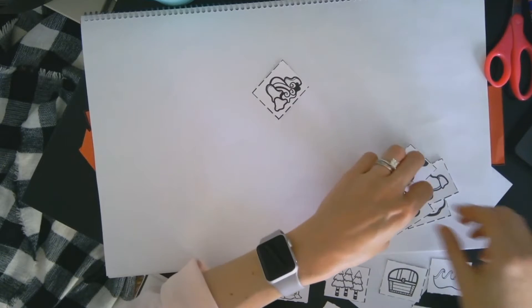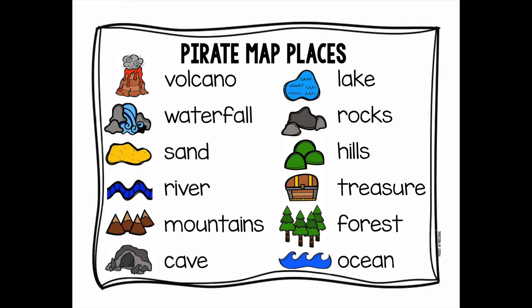I'm also going to use this map key to help me remember what each picture means. I now know what is the volcano, the waterfall, sand, river, mountains, cave,